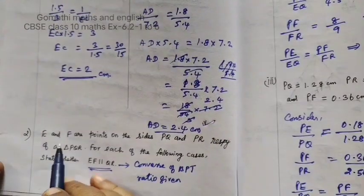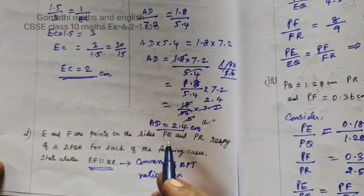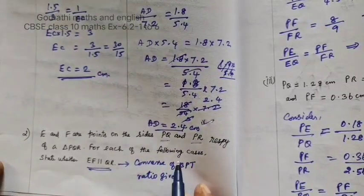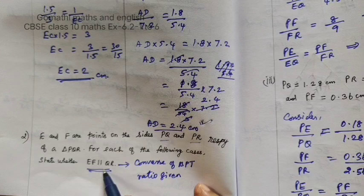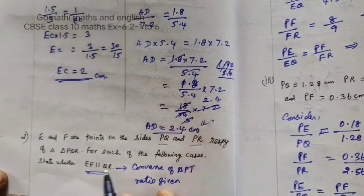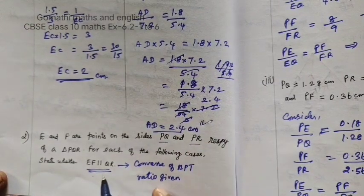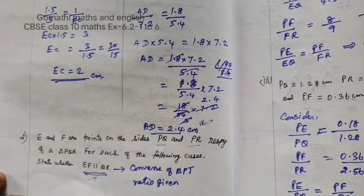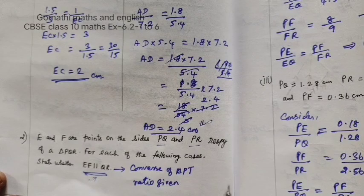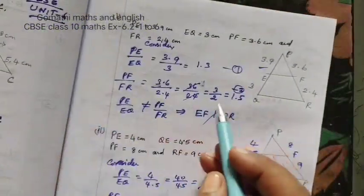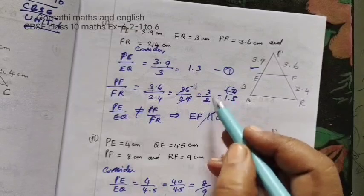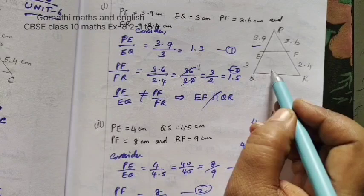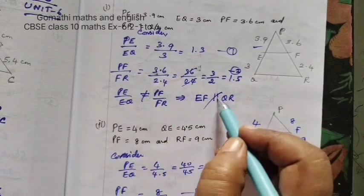Now, E and F are the points on the sides PQ and PR. For each of the following cases, state whether EF parallel to QR. When we want to prove parallel, you are using converse of BPT. So converse of BPT - if the given ratio equals, that means these two lines are parallel. If not equal means not parallel.